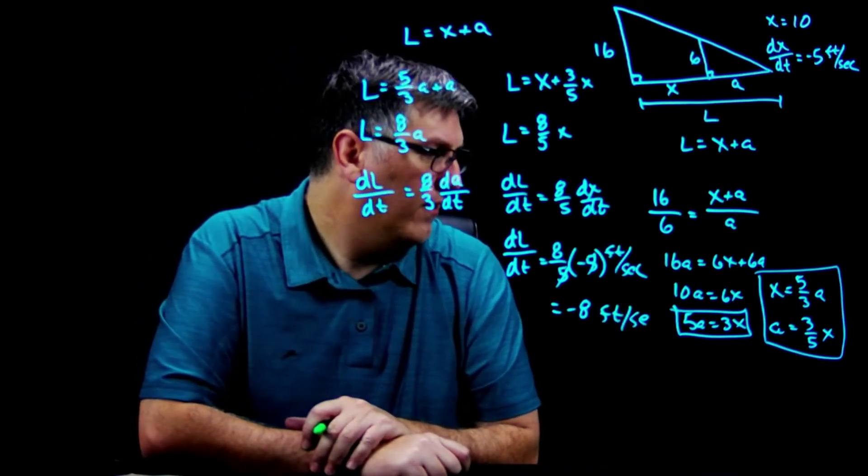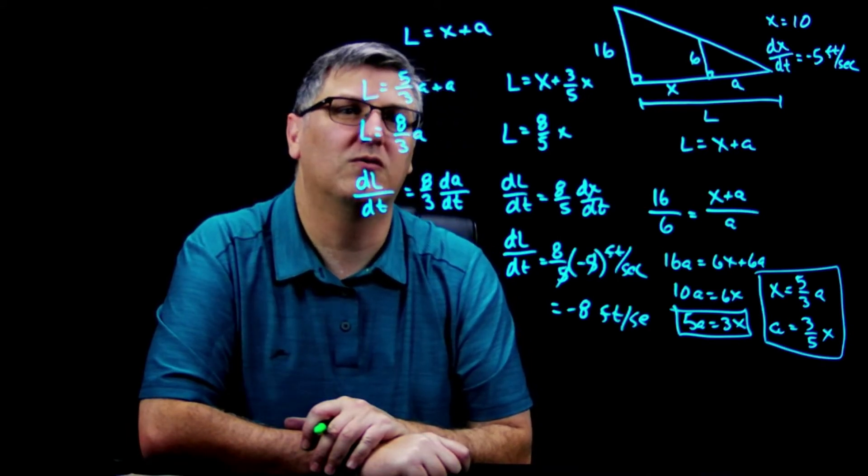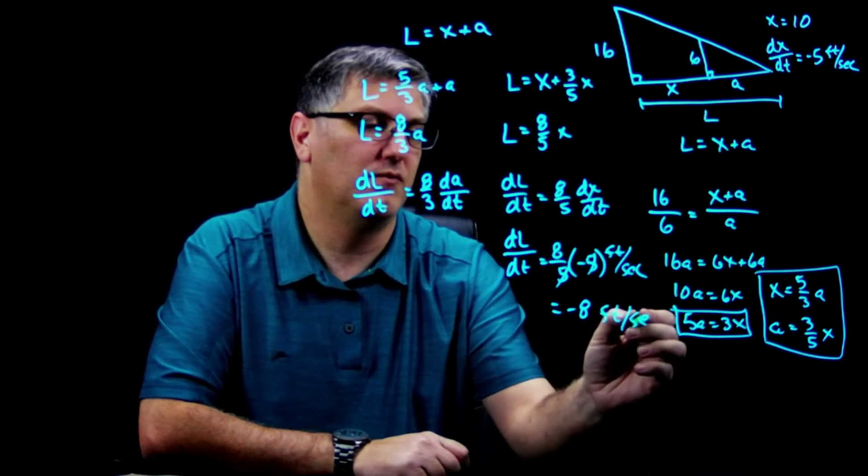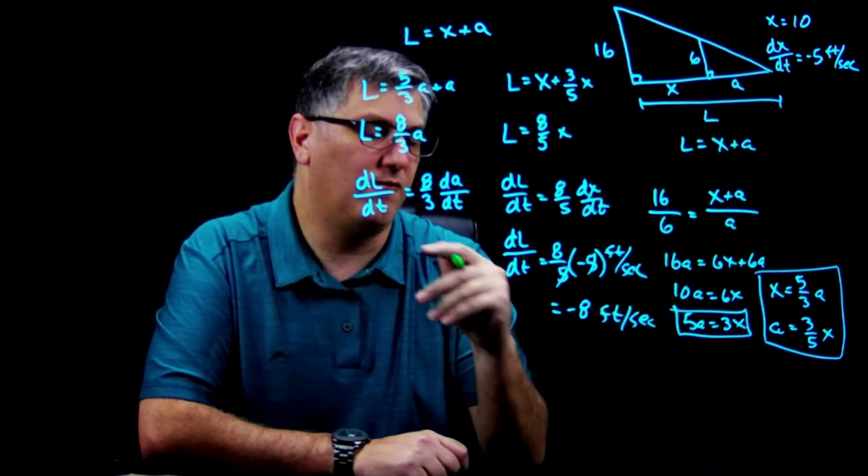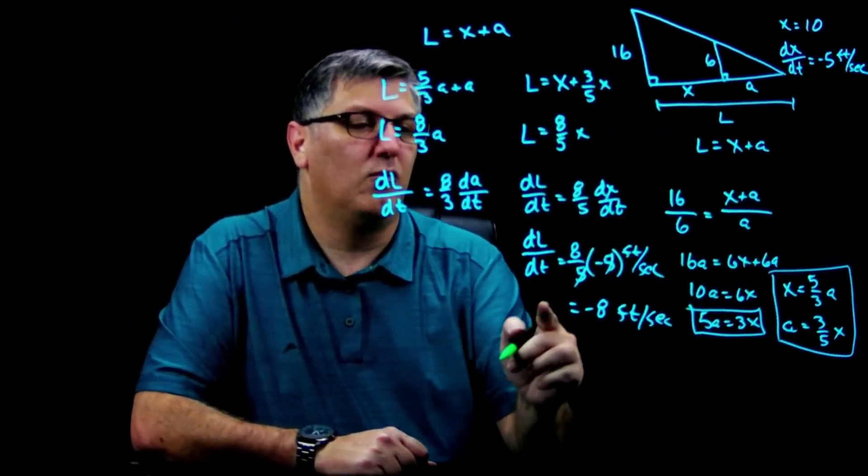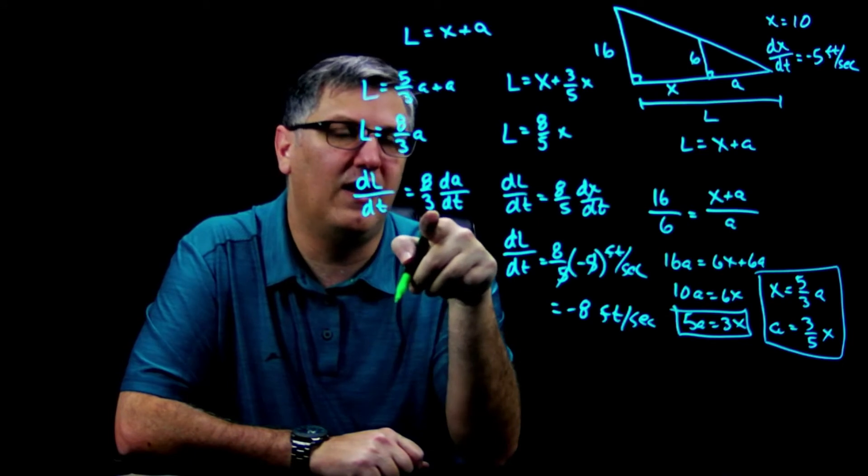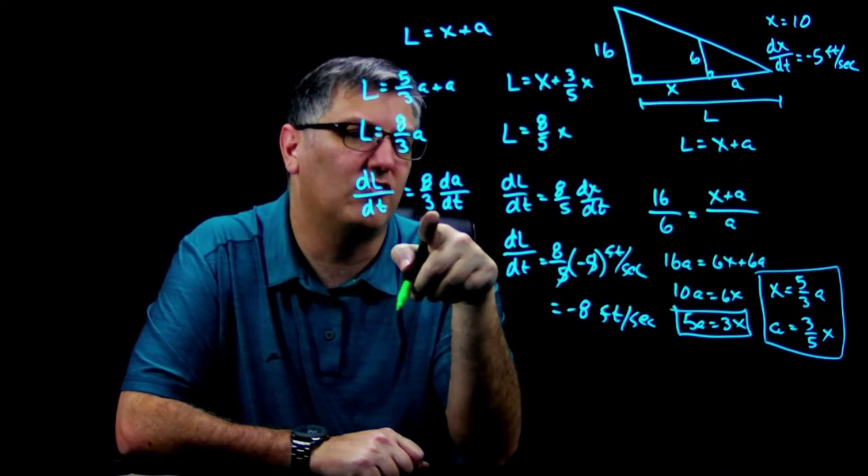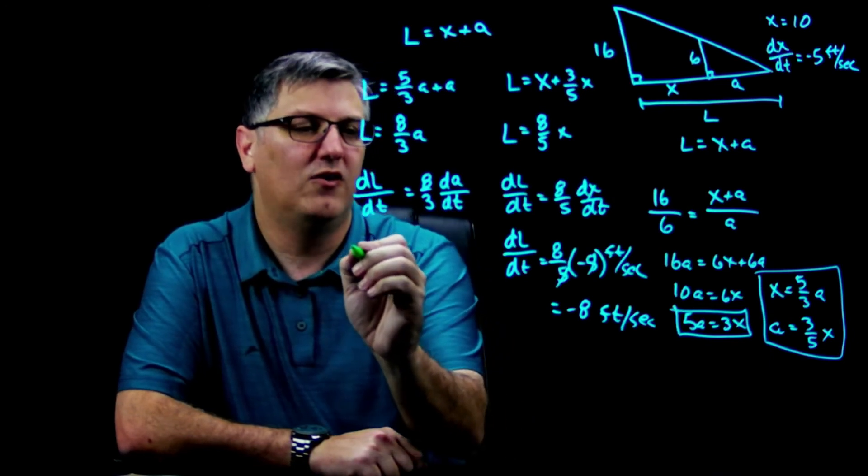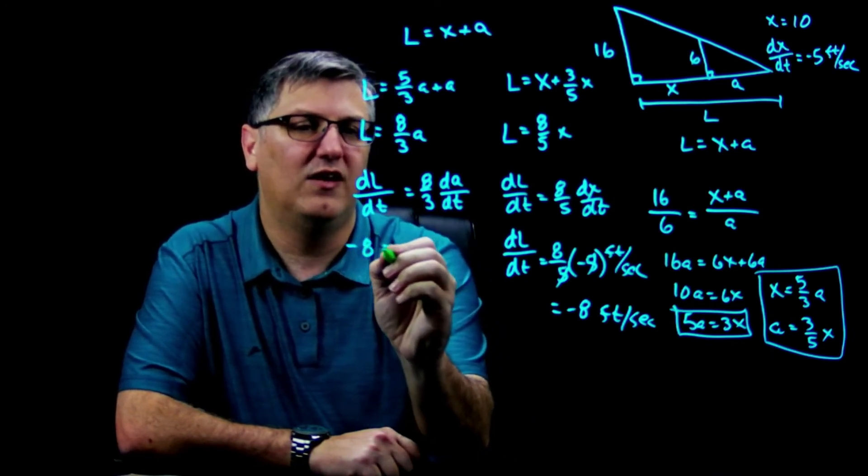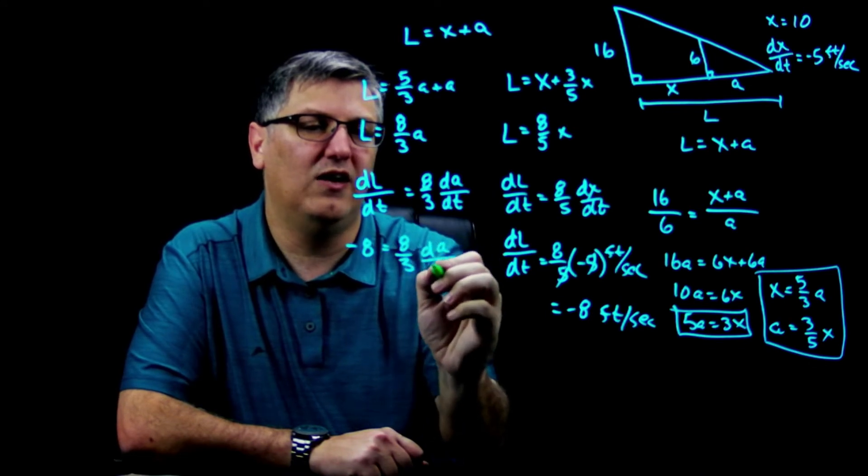All right, so that means my shadow is moving at negative eight feet per second. All right, well this is dL, I have a dL right here and I have eight thirds, I have this here. So I can actually solve for da by using the dL I just found. So I've got negative eight equals eight over three da/dt.